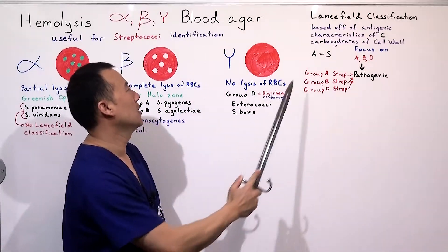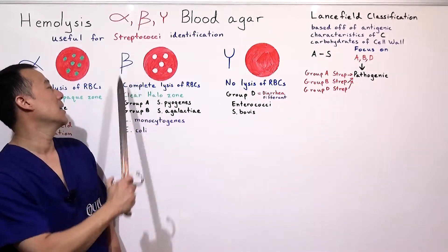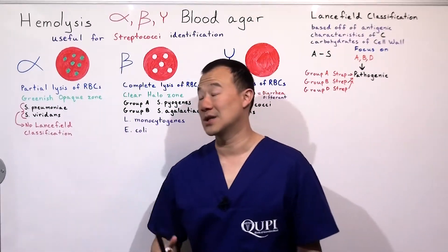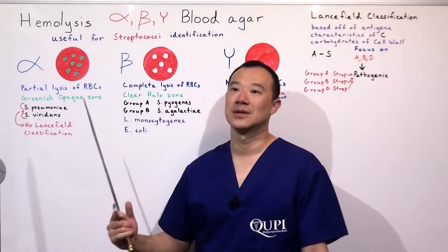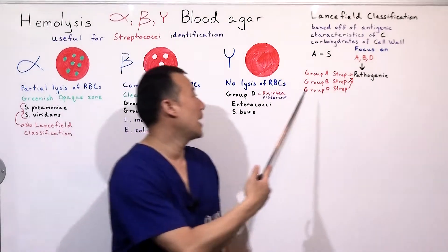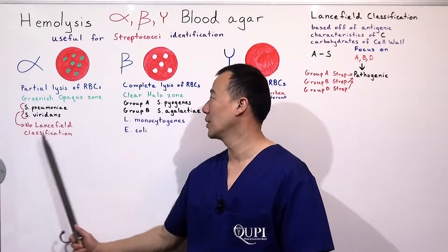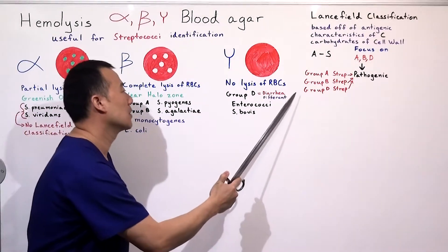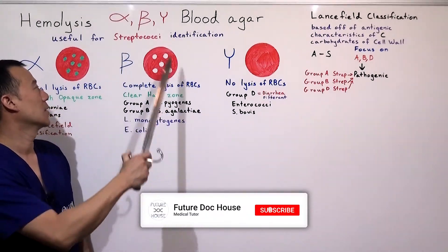Gamma hemolytic is Group D, and we know Group A and B are beta hemolytic. Alpha hemolytic streptococcus have no Lancefield classifications. Don't get confused: alpha hemolytic and Group A streptococcus are different. Alpha — A for alpha — means no Lancefield classification. Group A here is a beta hemolytic bacteria; Group A is under beta hemolytic.